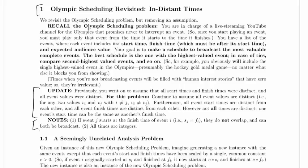Recall the Olympic Scheduling problem. You are in charge of a live streaming YouTube channel for the Olympics that promises never to interrupt an event, so once you start playing an event you must play only that event from the time it starts to the time it finishes. You have a list of the events where each event includes its start time, finish time, which must be after its start time, and expected audience value. Your goal is to make a schedule to broadcast the most valuable complete events. The best schedule is the one with the highest valued event, and in case of ties compare second valued events, and so on.